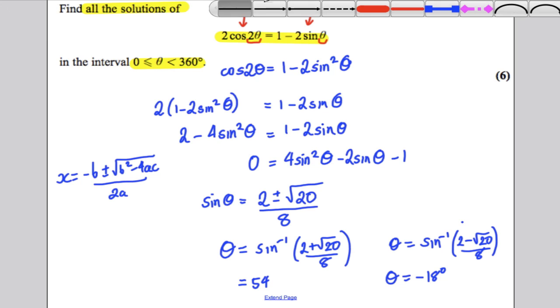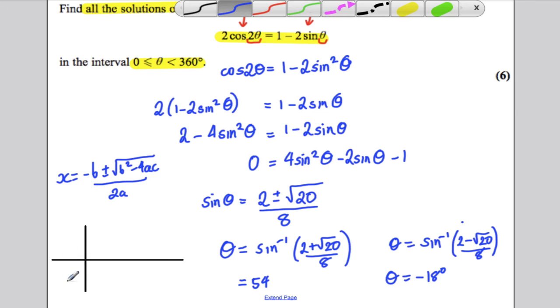Now, we've just got to think, have we got all solutions? So let's draw our graph out. We're going between 0 and 360. So let's just draw it a little bit. 0 and 360 looks something like this.